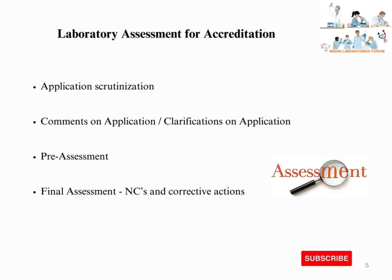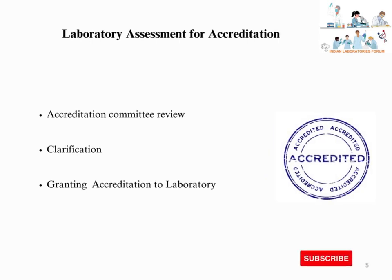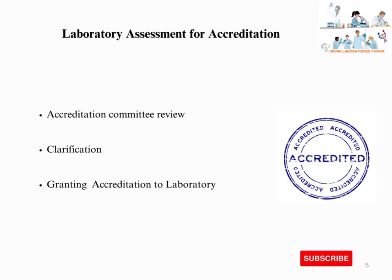Assigned auditors complete the final assessment and raise non-conformances if required. The laboratory takes proper corrective actions and submits documentary evidence to the auditors for review and closure. If corrective actions are satisfactory, auditors close the non-conformances. All non-conformances and corrective actions are then reviewed by expert members of the accreditation committee or accreditation task force. If any clarification is required, the accreditation body communicates this to the laboratory. Upon satisfactory clarifications, the committee grants accreditation to the laboratory.